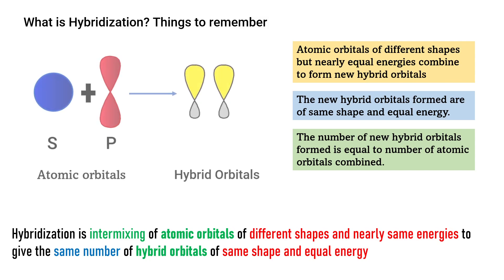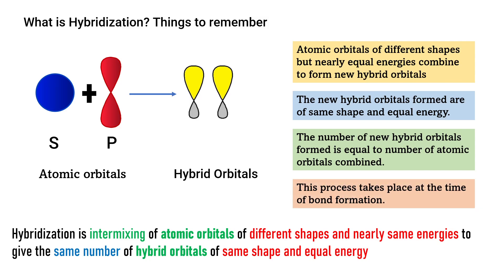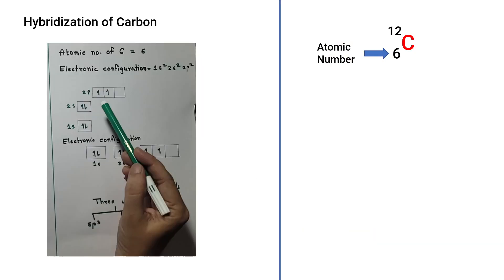The number of new hybrid orbitals formed is exactly equal to the number of atomic orbitals combined. For example, s and p are atomic orbitals — s is spherical in shape, p is dumbbell-shaped. If they are of nearly equal energies, they may combine to form hybrid orbitals. If two atomic orbitals are combining, two new hybrid orbitals will be formed. This process of hybridization takes place at the time of bond formation.